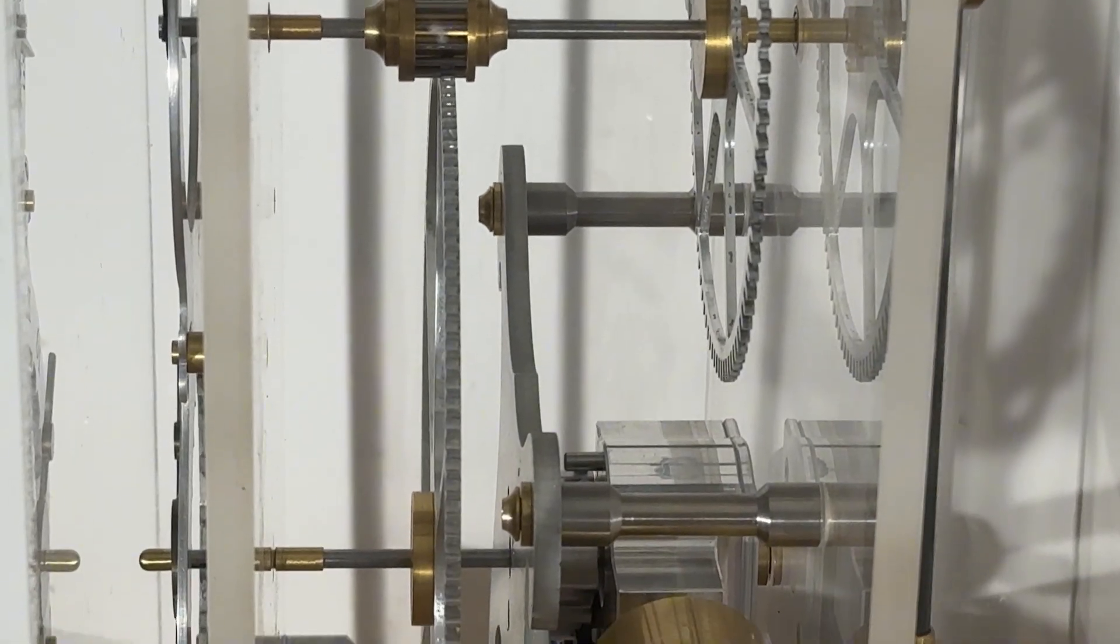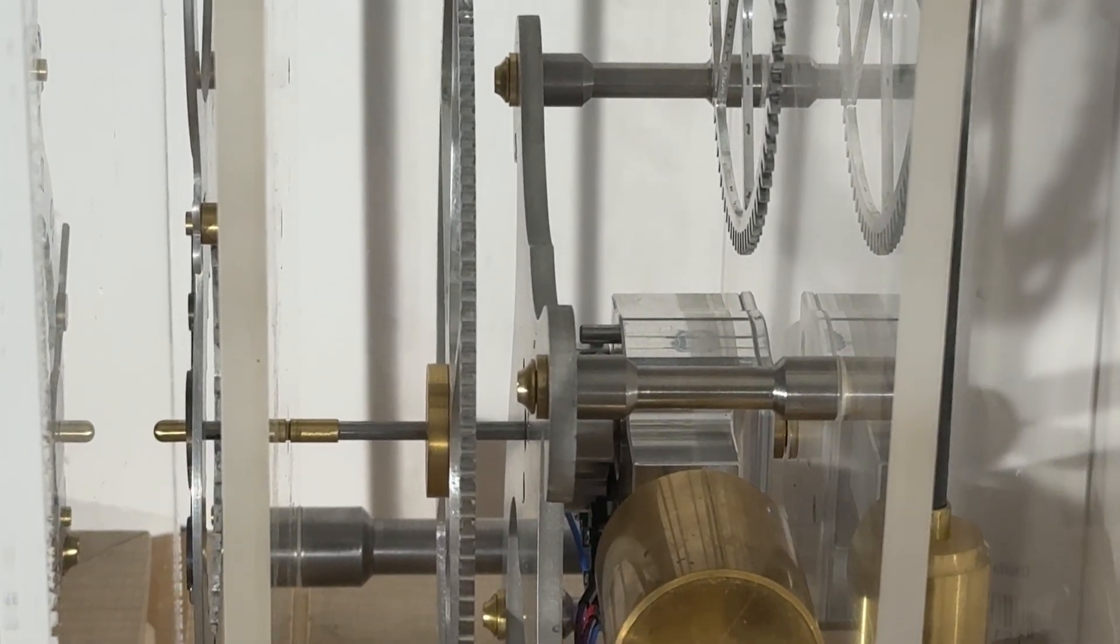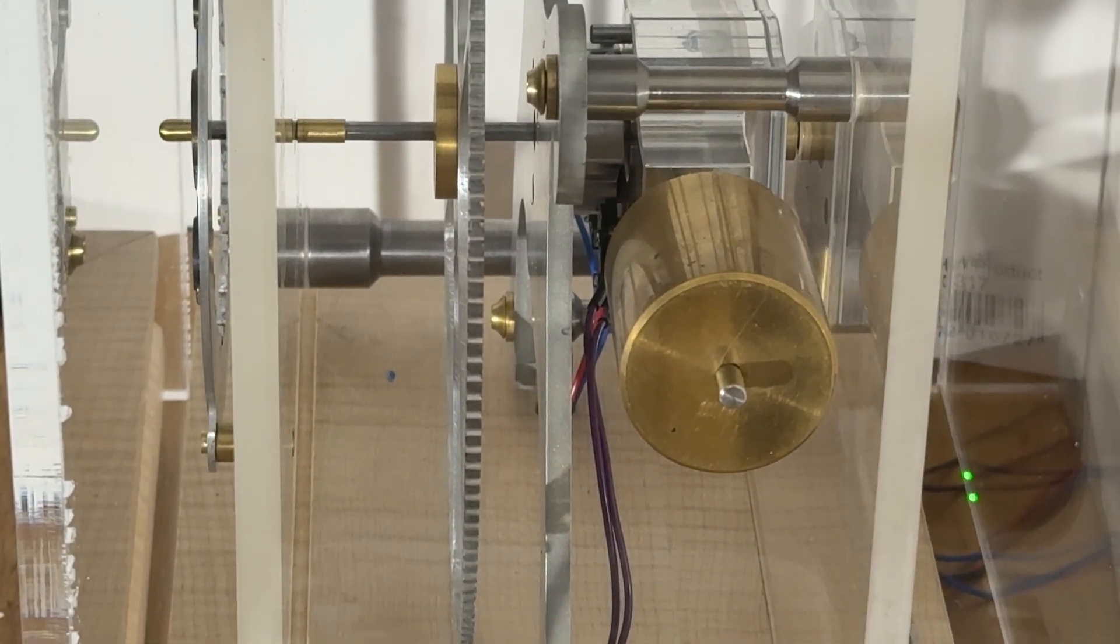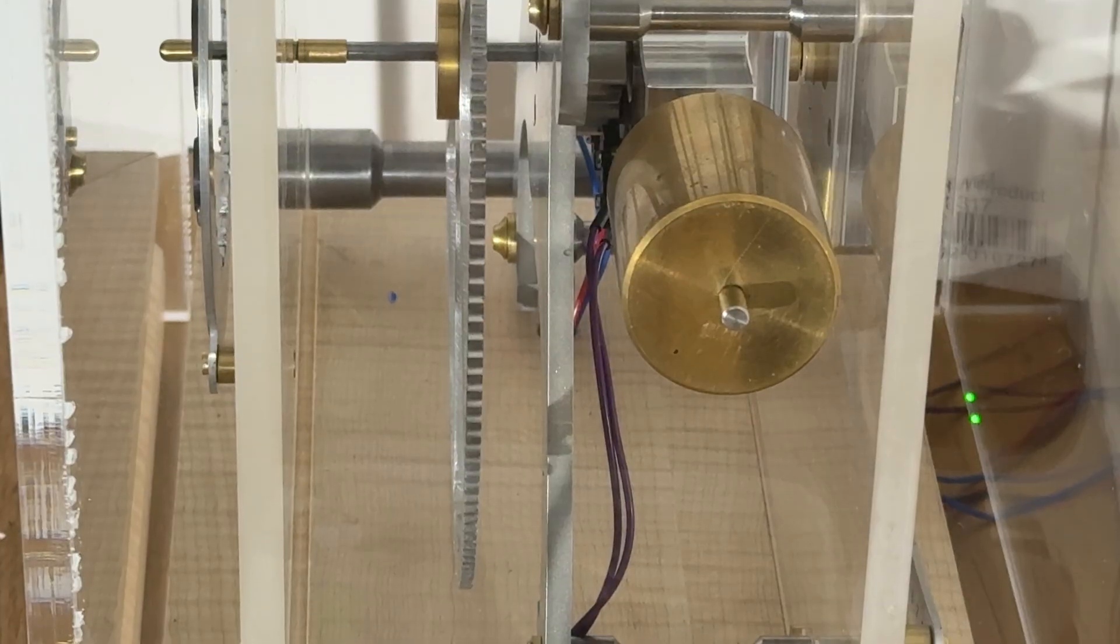Moving down the clock you can see the pinion attached to the great wheel and attached to the great wheel is the electrical rewind system with the brass weight hanging off the end. This weight applies a cantilevered torque to the great wheel which powers the whole clock.